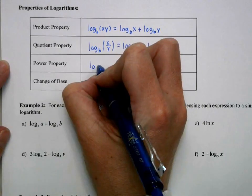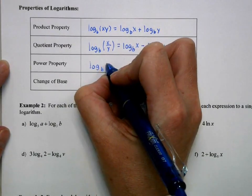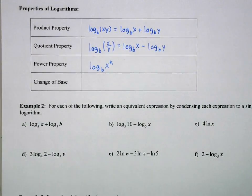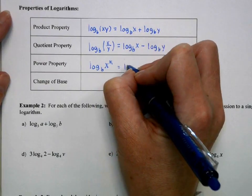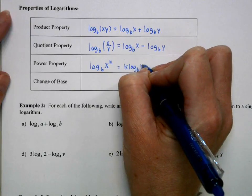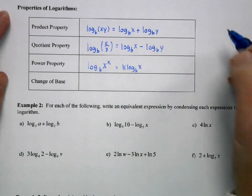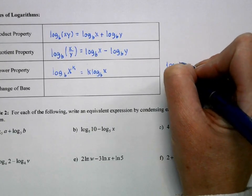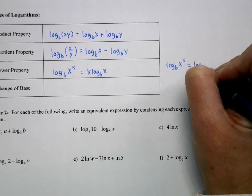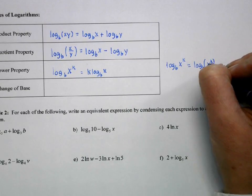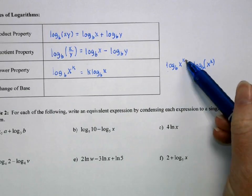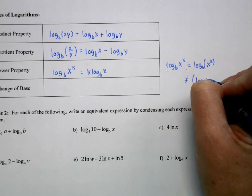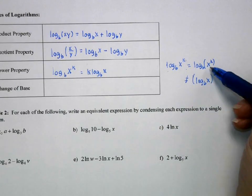The power property. Okay, so if I have log base b of something to a power, we can multiply that power out front. Now, just a note on this, that this k, this is equivalent to log base b of x to the k. The x is getting raised to the k, so we understand that in this notation, but that's an important note. It doesn't equal log base b of x to the k. The k power is applying just to that x, not the whole function.